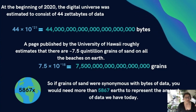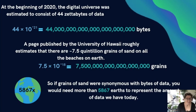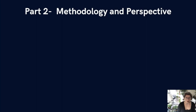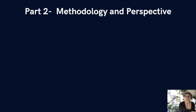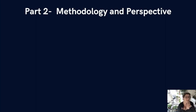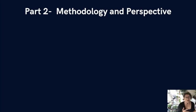A page published by the University of Hawaii estimates there are about 7.5 quintillion grains of sand on all the beaches on Earth. So to put this in perspective: if grains of sand were bytes of data, you would need more than 5,867 Earths to represent the amount of data we have today, and that number is growing rapidly. As a programmer, I love data — but I think this is where a computer scientist starts to differ from a data scientist.